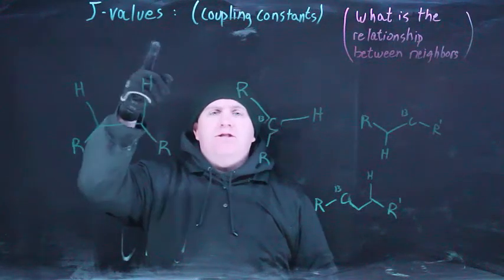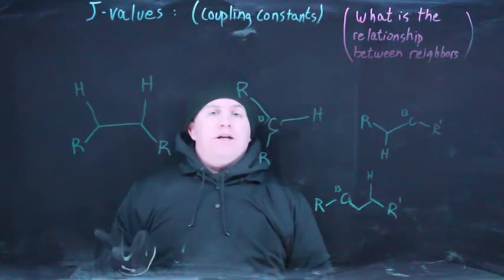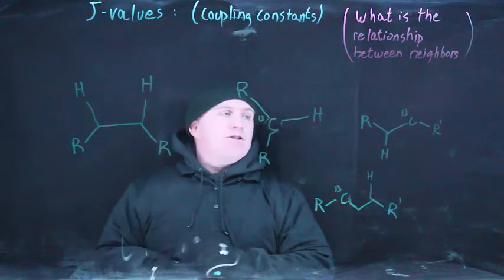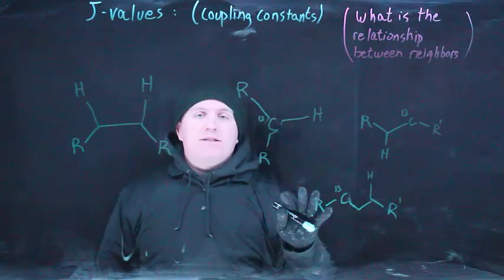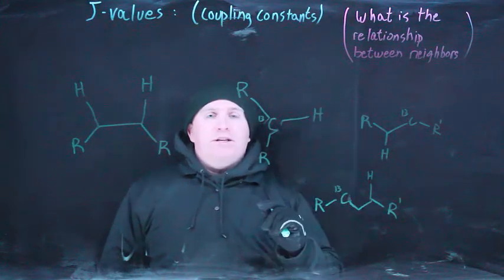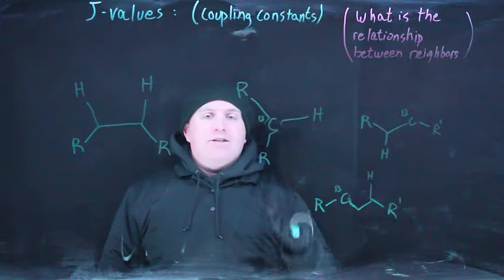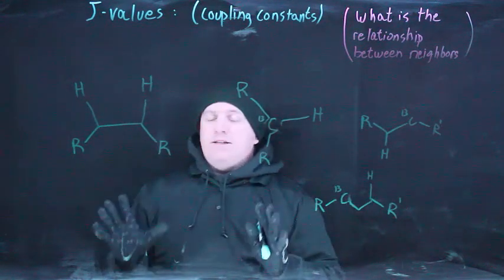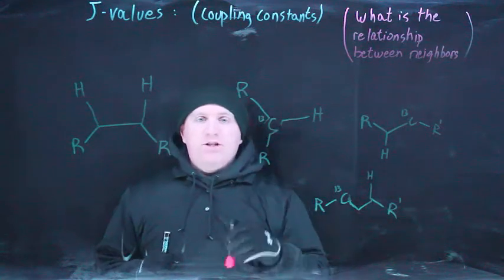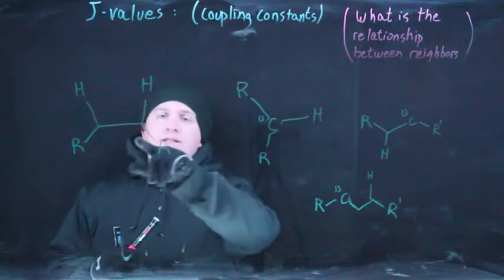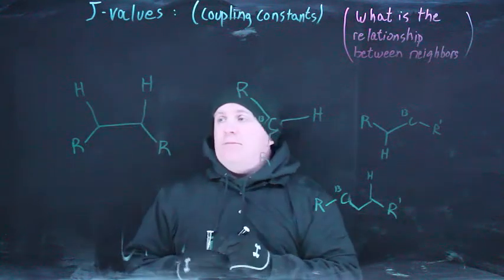This video is going to be about J values, otherwise known as coupling constants. I've already indirectly referred to them in previous videos, and in particular I spent time showing you how I got them on the carbon multiplicity video. More often than not, the J values that you're going to be interested in are referring to this specific relationship between hydrogen atoms.